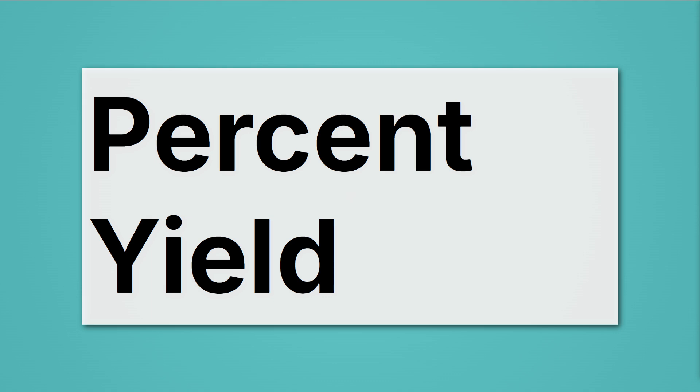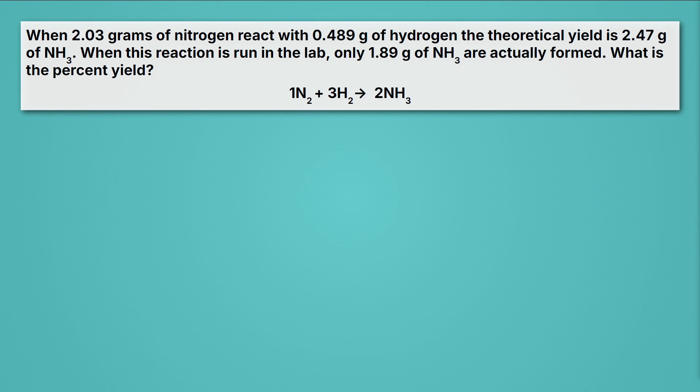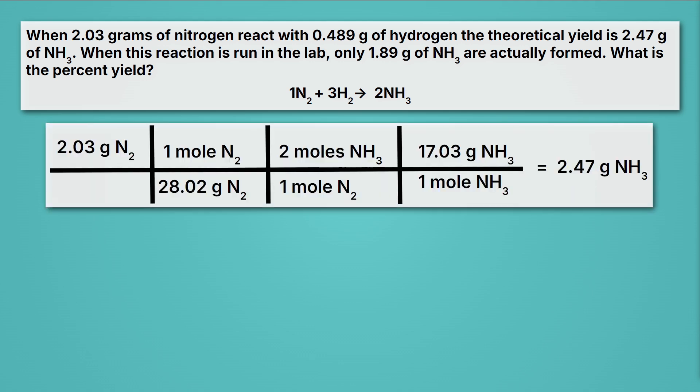This problem says when 2.03 grams of nitrogen react with 0.489 grams of hydrogen, the theoretical yield is 2.47 grams of NH3. So far, that's just all the information we've already determined in this video. Then it says when the reaction is run in the lab, so now we actually go do it, only 1.89 grams of NH3 are actually formed. Actually formed means that's what we got in the lab. It's like our seven brownies. What is the percent yield? Well, keep in mind that we've already calculated the theoretical yield, and that only 1.89 grams of NH3 was actually formed. So that's our actual yield.